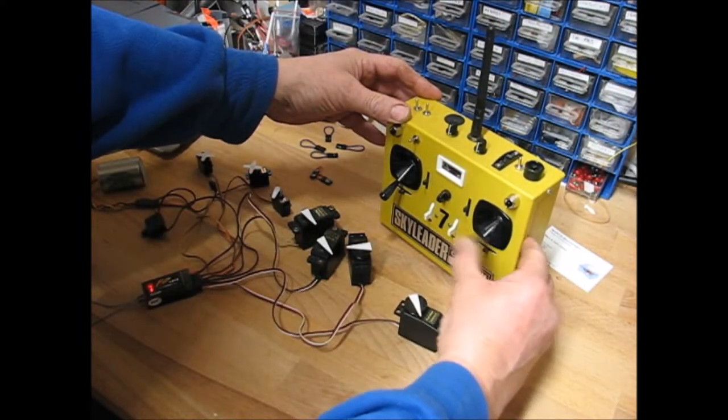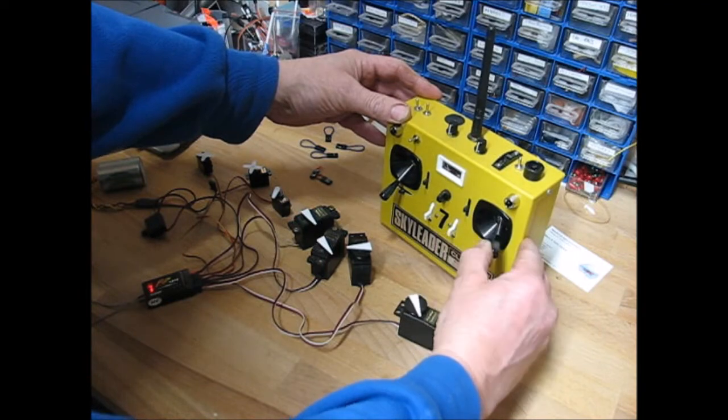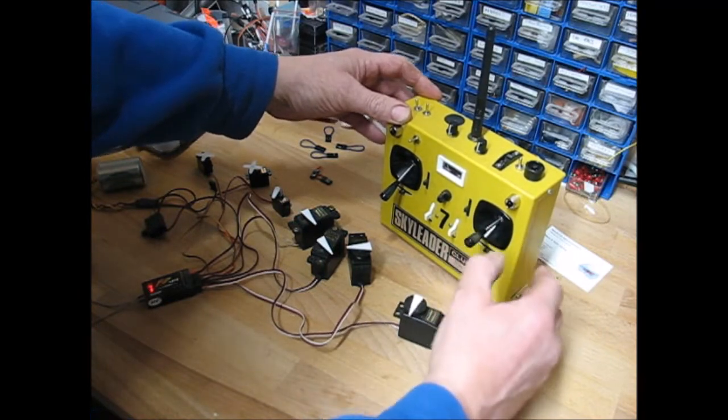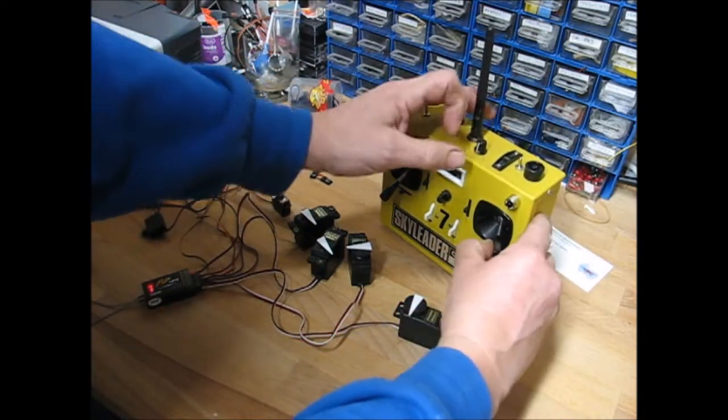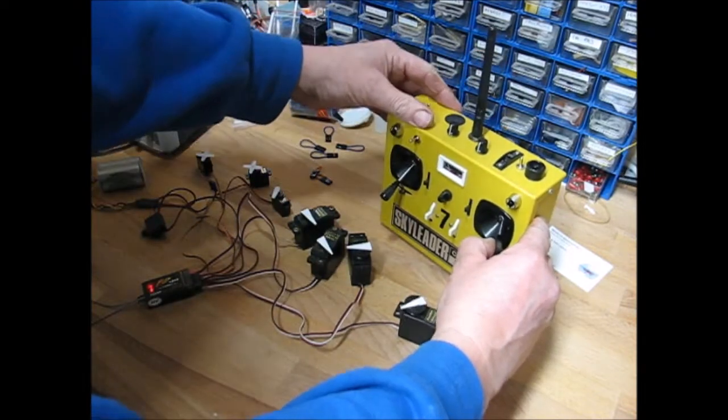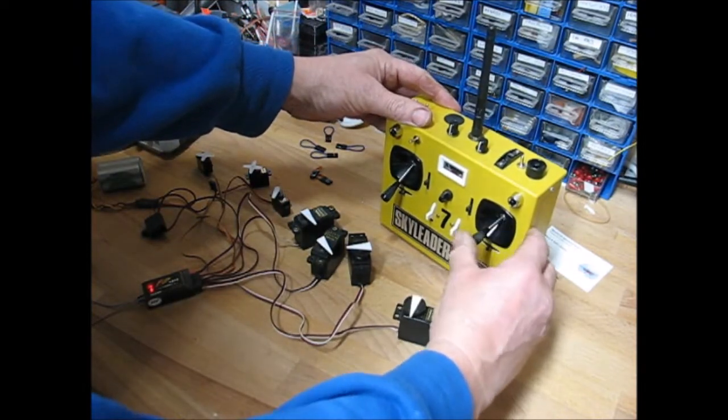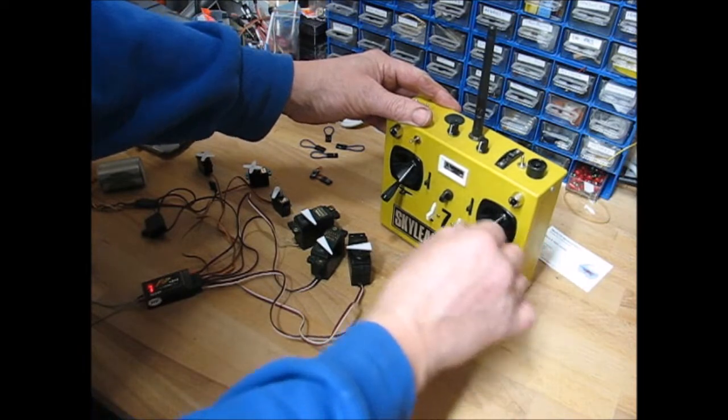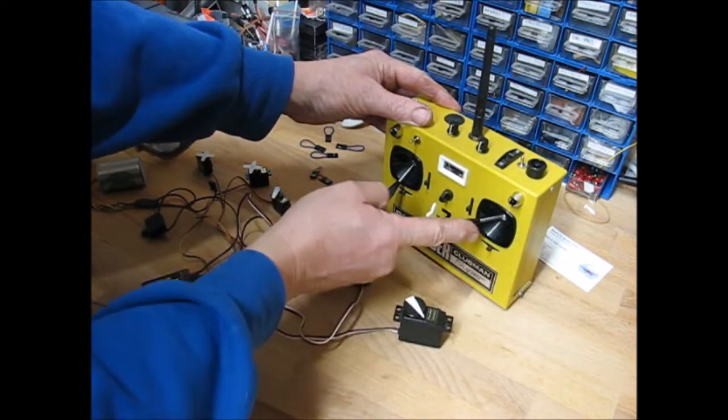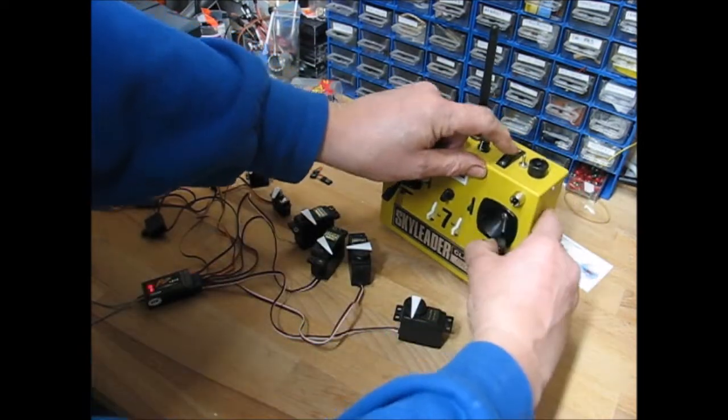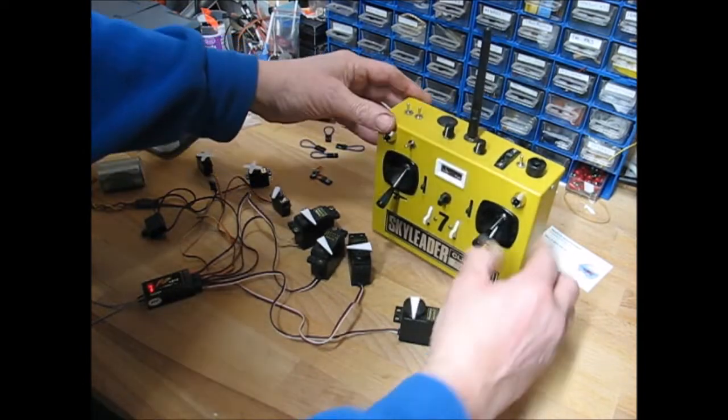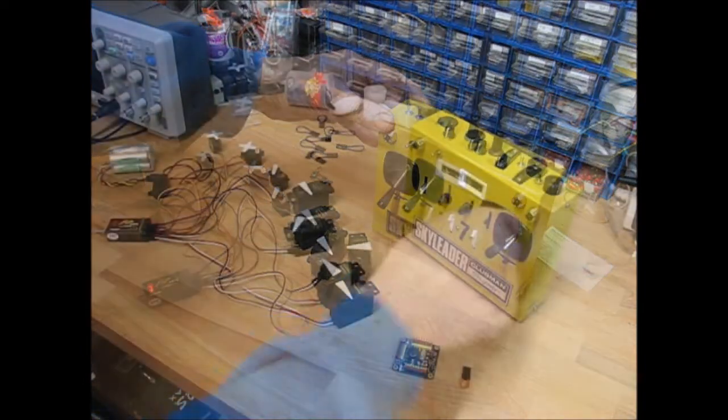At the moment the aileron servo is following the stick right for right. But to reverse the aileron you switch off, hold the aileron channel over, switch on, and then it's reversed the servo. So we're going the opposite way to the stick now. Switch off, hold the stick over, switch on, and that's reversed it back again. So I think that's everything.